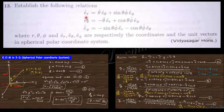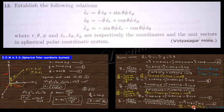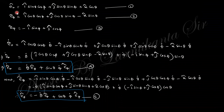The next question asks to establish the relation: ṙ_cap = θ̇·e_θ_cap + sinθ·φ̇·e_φ_cap, where e_θ is the unit vector along θ and e_φ is the unit vector along φ. To derive this you need the expressions from the theoretical part of classical mechanics, links available in the description box. r_cap is e_r, θ_cap is e_θ, and φ_cap is e_φ.